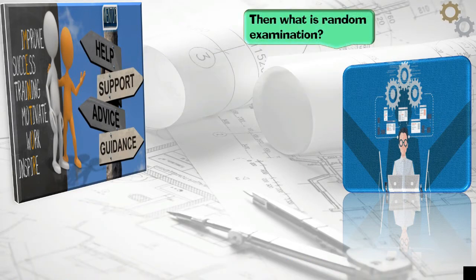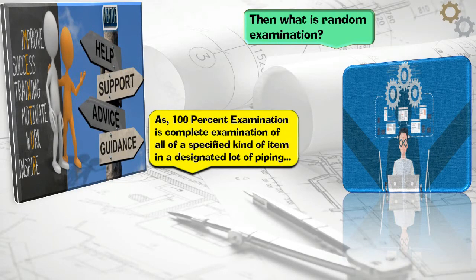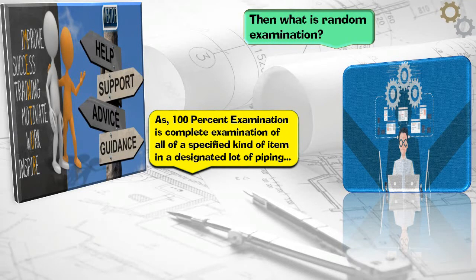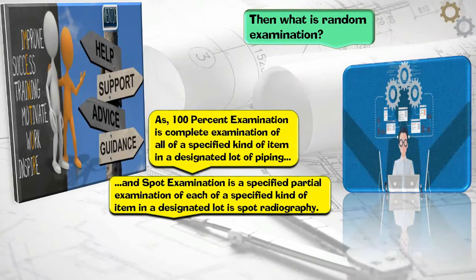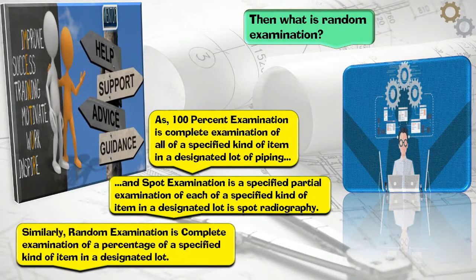Then what is random examination? 100% examination is complete examination of all of a specified kind of item in a designated lot of piping. Spot examination is a specified partial examination of each of a specified kind of item in a designated lot. Similarly, random examination is complete examination of a percentage of a specified kind of item in a designated lot.